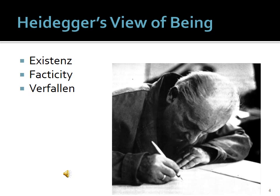A simplified form of systems theory can be found in the philosopher Heidegger's view of being. This German philosopher said that at any given time, there are three major influences impacting our lives. They are, in the German: existence, facticity, and verfallen.